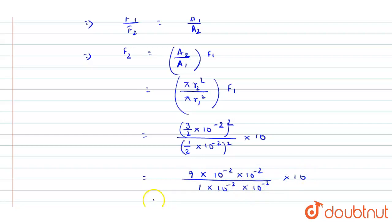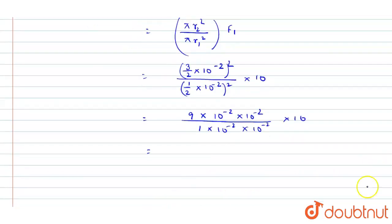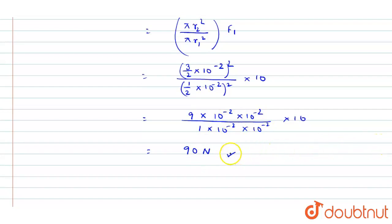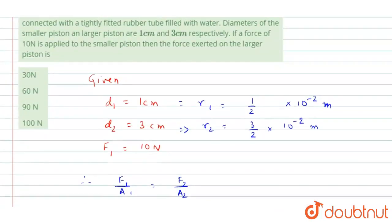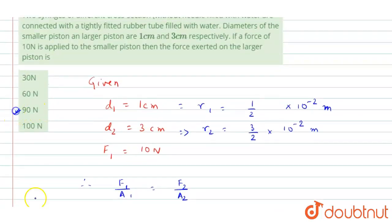Calculating this, the force exerted on the larger piston is 90 newtons. The third option matches our answer. I hope you liked the video, thank you.